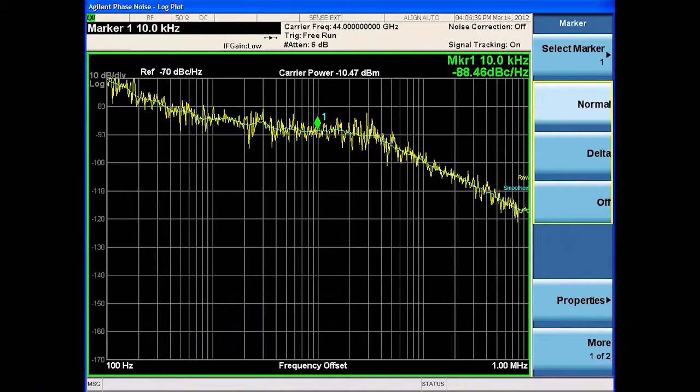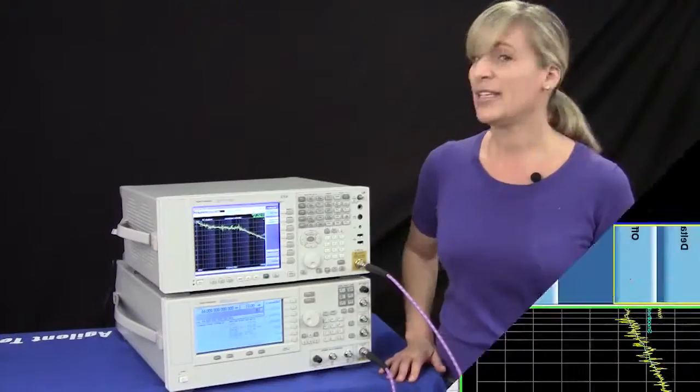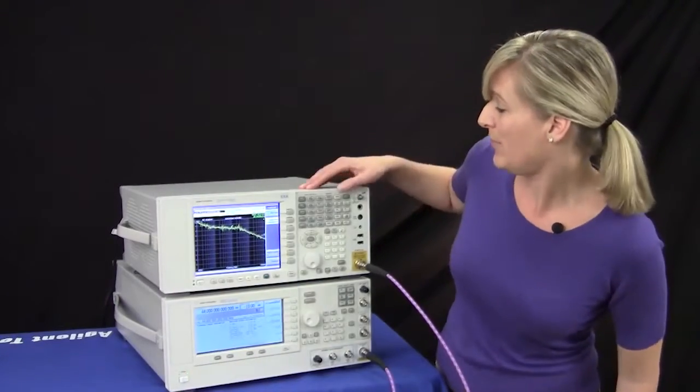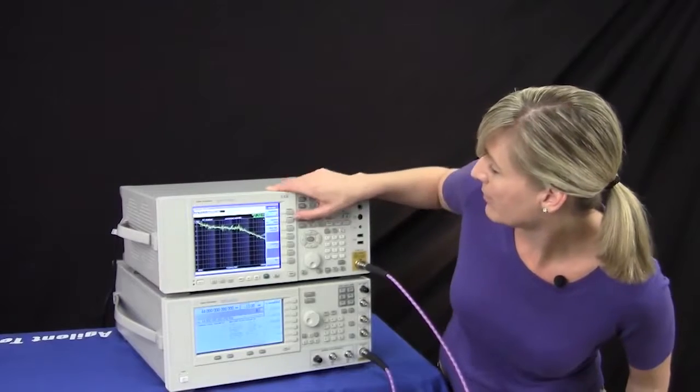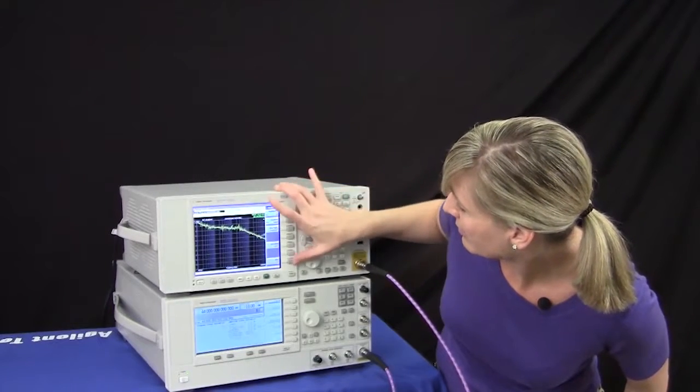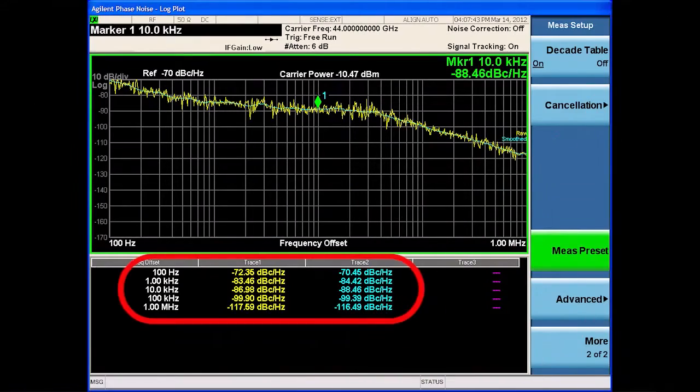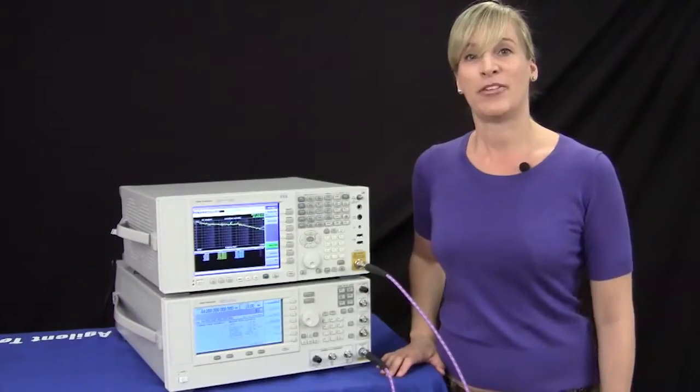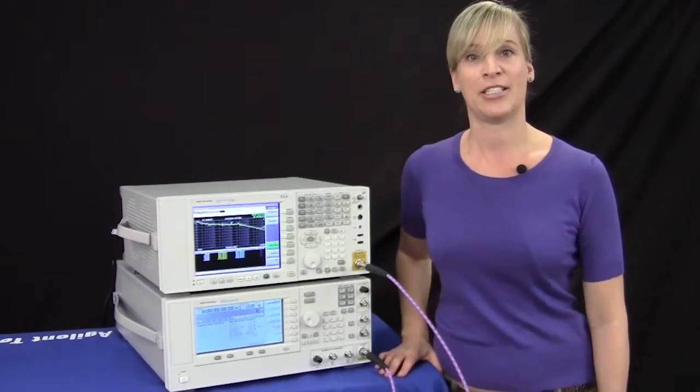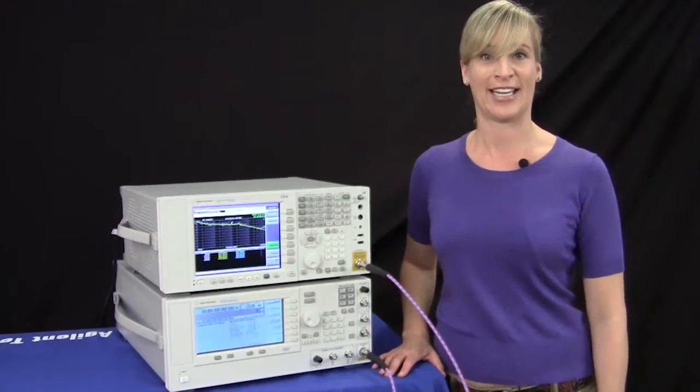This is showing you the phase noise on the log plot frequency view. It's a single sideband relative to the carrier. A marker has been placed at the 10 kilohertz offset. Within this application we also have a decade table that can be turned on and then you can view the phase noise performance relative to the carrier by decade. This is just one of over 20 measurement applications that are available on the new millimeter wave EXA.